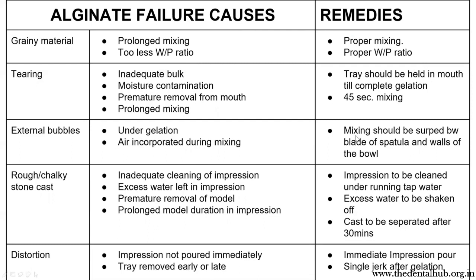Mixing should be performed between the blade of the spatula and the walls of the bowl. A rough or chalky stone cast could be due to inadequate cleaning, excess water, premature removal, or prolonged model immersion in the impression; the remedy is to clean the impression under running tap water, shake off excess water, and separate the cast after 30 minutes. Distortion occurs when the impression is not poured immediately or the tray is removed too early or too late; the remedy is immediate impression pouring and a single jerk after gelation.